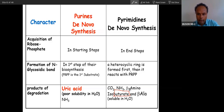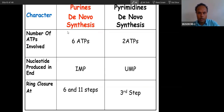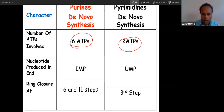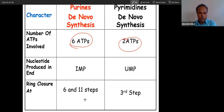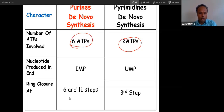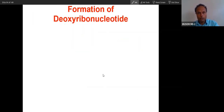In summary: purine synthesis requires 6 ATP and proceeds through 11 steps, while pyrimidine synthesis requires 2 ATP and 6 steps. Ring closure occurs at the third step in pyrimidine synthesis.